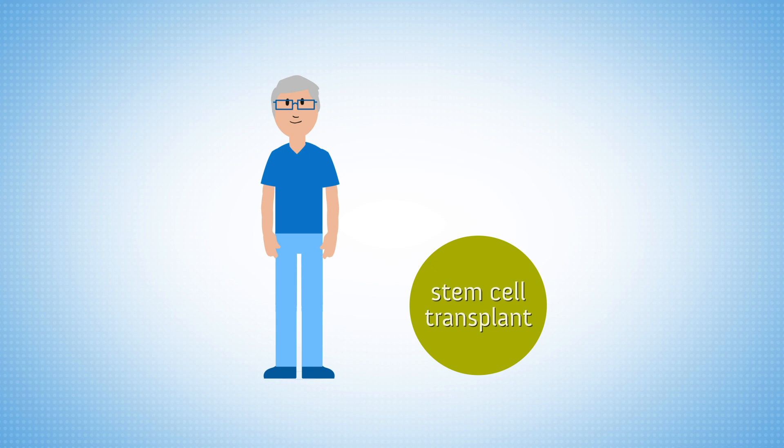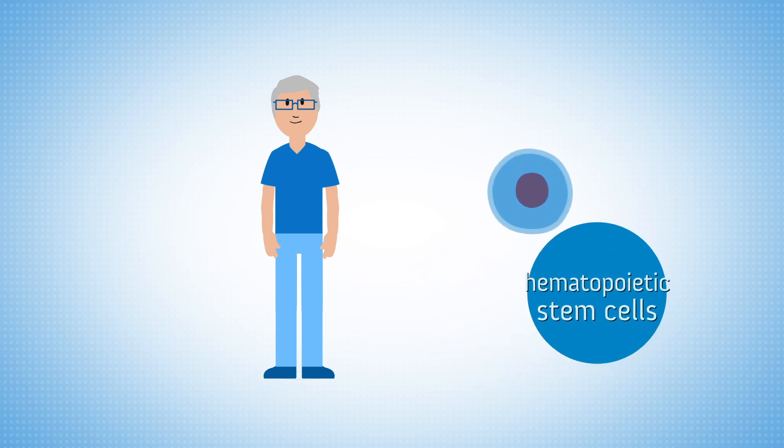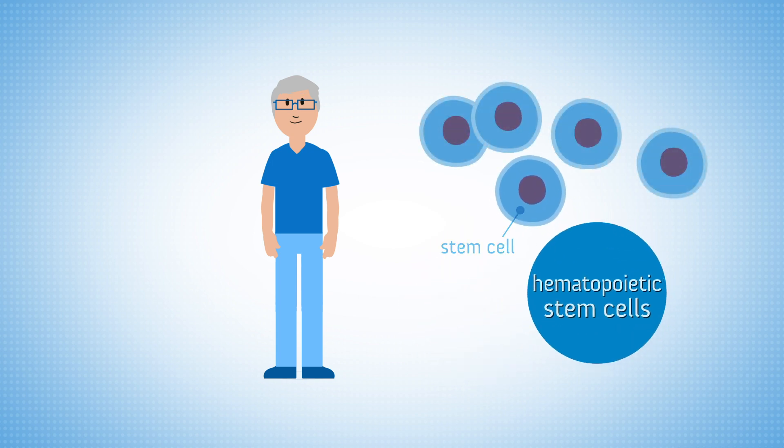There are different types of stem cell transplants, also known as blood and marrow transplants, but all involve the infusion of hematopoietic stem cells, a type of cell found in bone marrow that has the ability to mature into healthy blood cells.